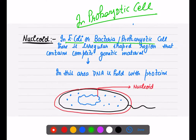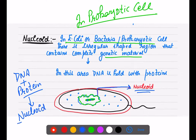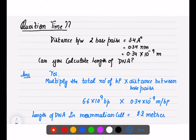In prokaryotic cells such as E. coli or bacteria, there is an irregular-shaped area which contains the complete genetic material. In this area, DNA is held together with proteins. This irregular area is known as the nucleoid. Since prokaryotes do not have a well-defined nucleus, the DNA and proteins are present in this nucleoid region.